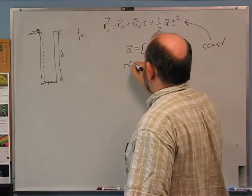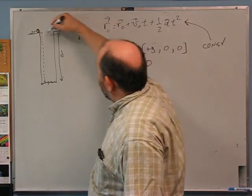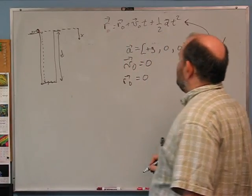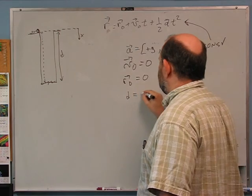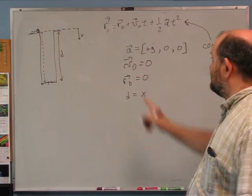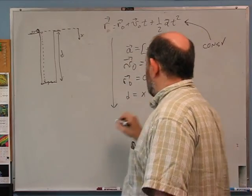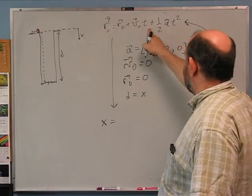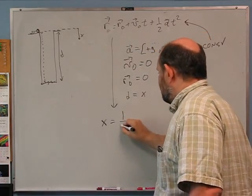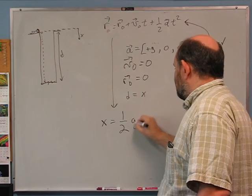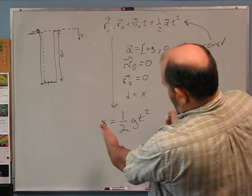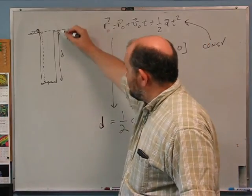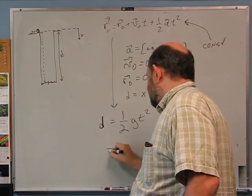We also have v₀ = 0, and I'm going to define x = 0 right where he drops it from, so r₀ = 0. The depth D is just the final distance traveled. Pulling out the x-component of the equation gives us: x = r₀ + v₀t + ½aₓt², which simplifies to x = ½g·t². The depth of the well is whatever x is at the final time. We're basically done — no algebra needed.